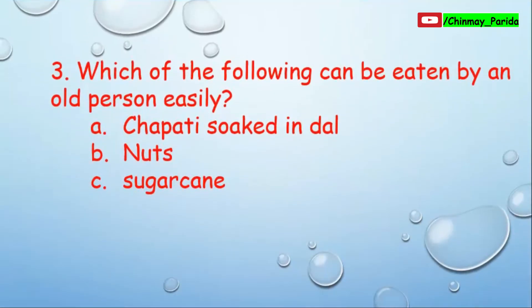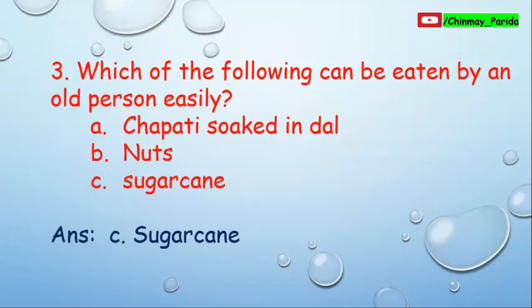Question three: Which of the following can be eaten by an old person easily? Options are option A: chapati and dal, option B: nuts, option C: sugarcane. An old person can't eat nuts easily because they don't have strong teeth to chew nuts. They also cannot eat sugarcane because their teeth are weak. But they can eat chapati and dal easily. So the correct answer is option A, chapati and dal.